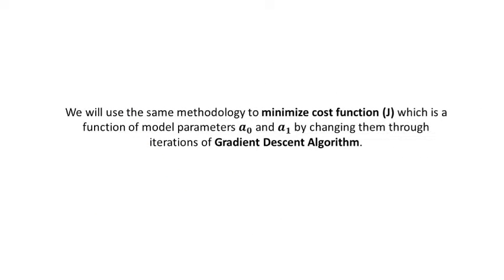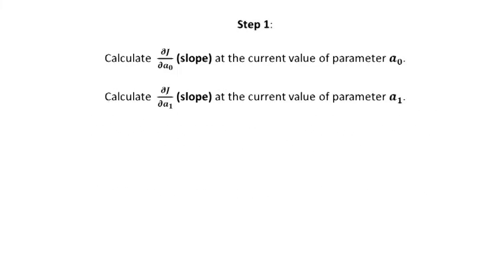Even in this case, we will use the same methodology to minimize cost function, which is a function of model parameters a0 and a1, by changing them through iterations of gradient descent algorithm. This is the part where it can get too mathematical for some people, but don't worry if you don't get it completely. You'll be working just fine without it as well. Step one in gradient descent algorithm would be to calculate slope with respect to both parameters separately at the current or initial value of parameters a0 and a1.